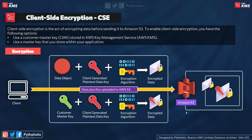Here's how the encryption part works: you have an object (such as a text file or log file). A randomly generated plaintext data key is created using the CMK, and that key is used to encrypt the object data (part one). Then, the encrypted data key is sent along with the encrypted data (part two). The encrypted data key and the encrypted data object are sent from the client to S3 for storage. S3 associates the encrypted data key with the encrypted object and stores both.